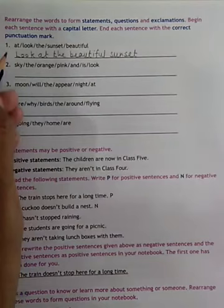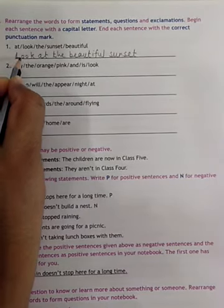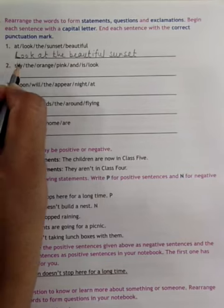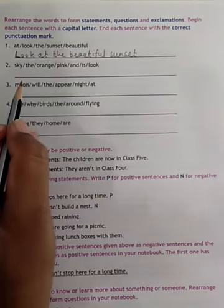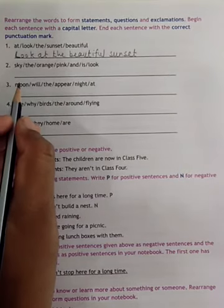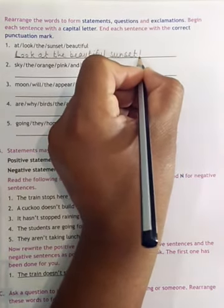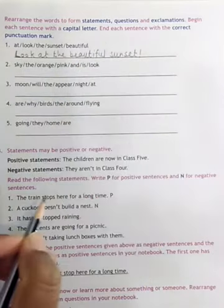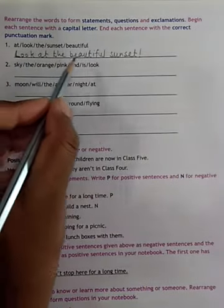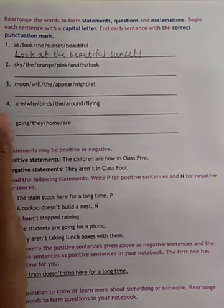Now, when we see sunset and we are very much excited. So, in excitement, we see or we say, look at the beautiful sunset. So, it's an exclamation. So, this is here, we give the exclamation mark. So, look at the beautiful sunset. So, we have made it exclamation.